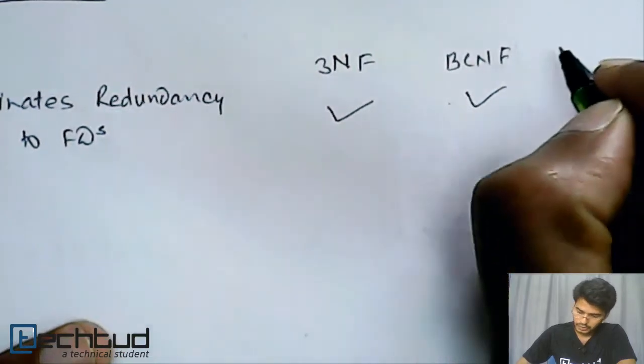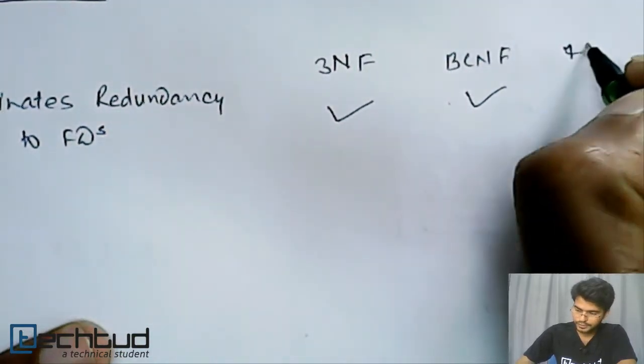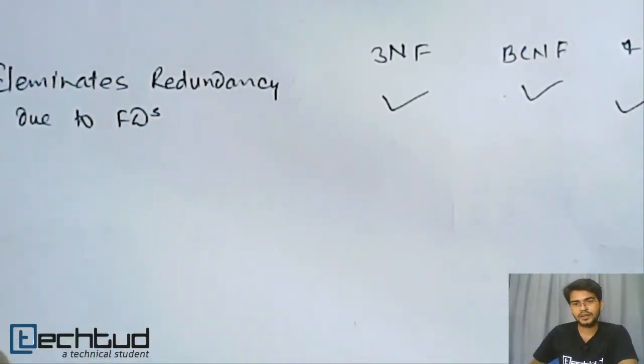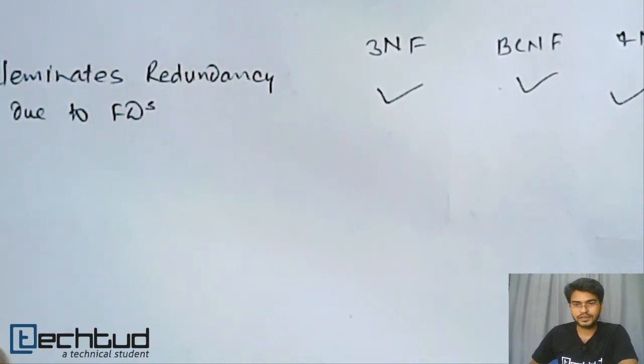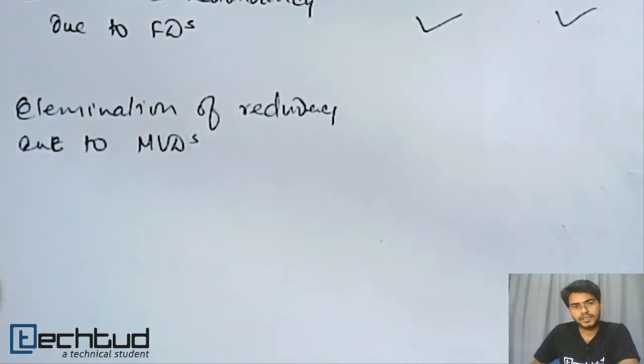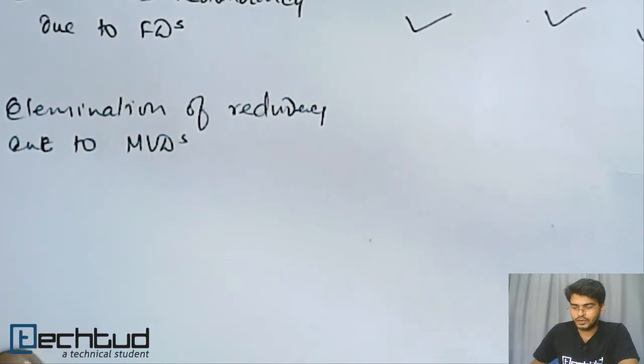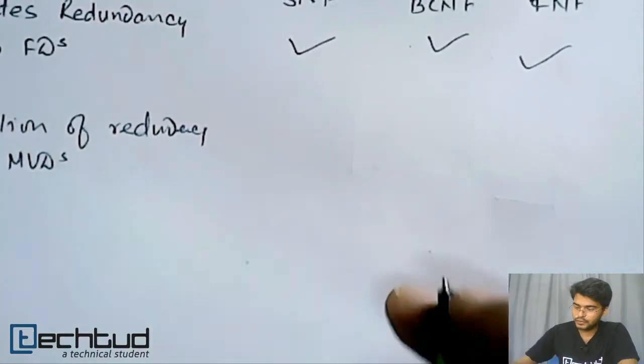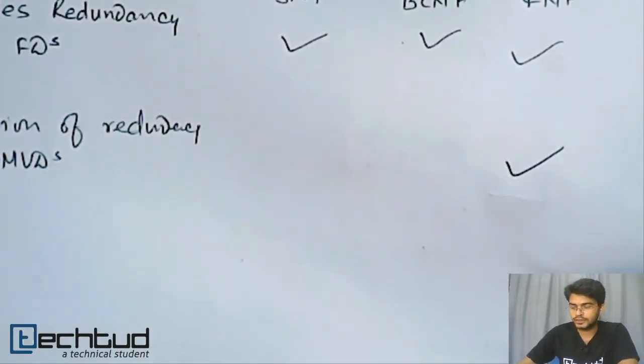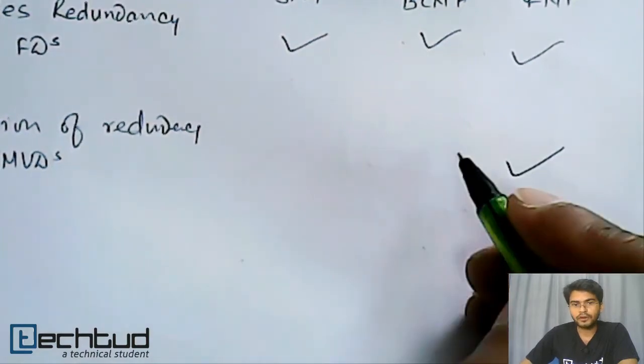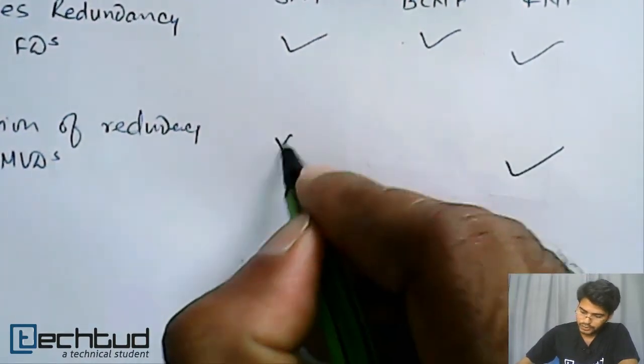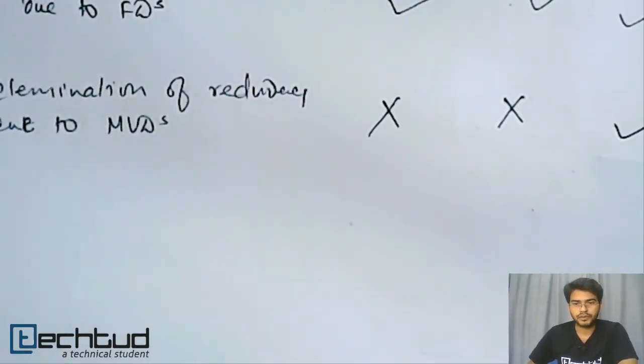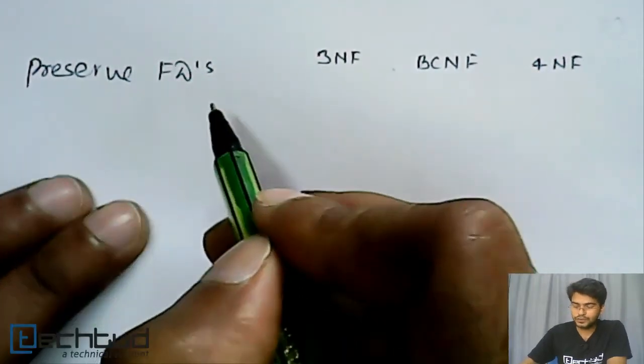The next is elimination of redundancy due to multi-valued dependency. So multi-valued, if you remember, is handled in fourth normal form. So fourth normal form obviously will remove this redundancy, but the third normal form and BCNF will not remove this. They will not remove this redundancy.